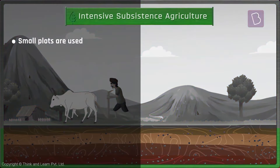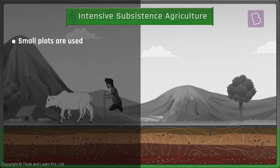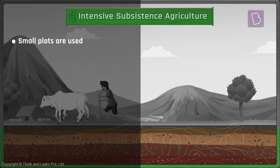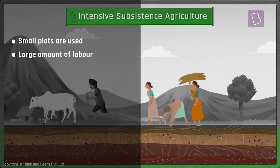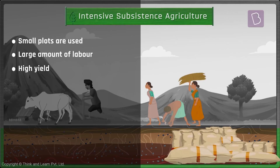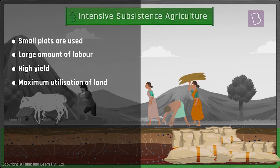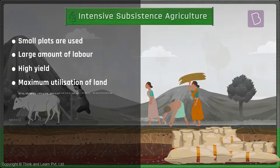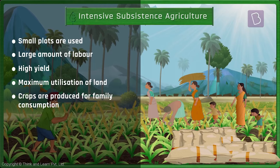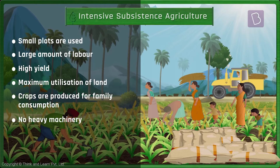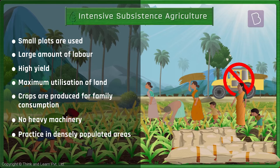Raghu farms on his small plot manually and thus he needs to expend a large amount of labor tending to his farm. For a small area the yield is very high as the farmer utilizes the land to the maximum. Crops are generally produced for consumption by the family. Heavy machinery is generally not used in this kind of farming.